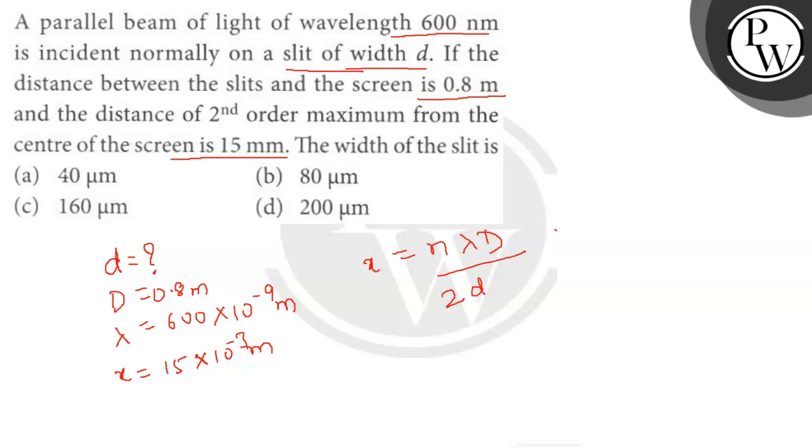This is second maxima so n equals to 5. Putting the value here, it will be equal to 5 into lambda equals 600 into 10 to the power minus 9, into d equals 0.8, upon 2 into small d. So x is given as 15 into 10 to the power minus 3.